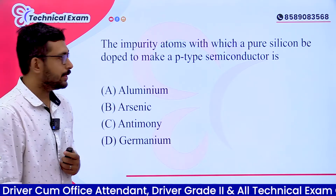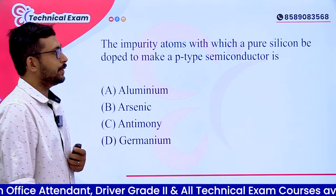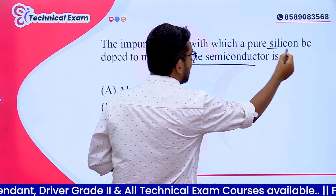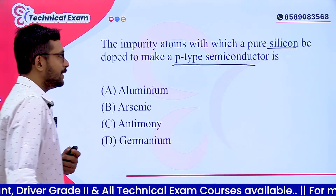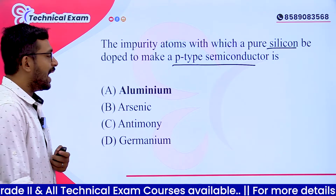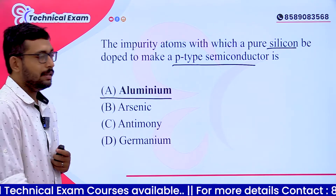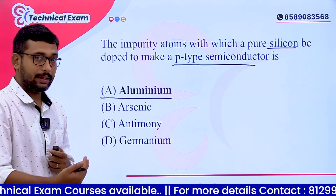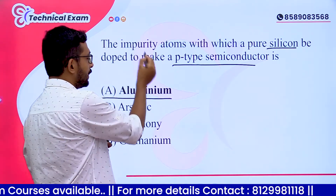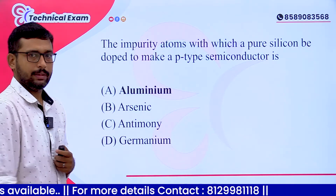The impurity atoms with which pure silicon is doped to make a P-type semiconductor — it is aluminum. Aluminum is the doping impurity used to create a P-type semiconductor in silicon. This is a basic electronics concept.